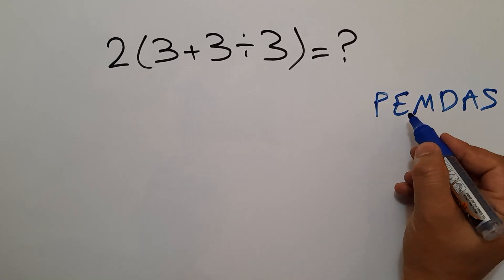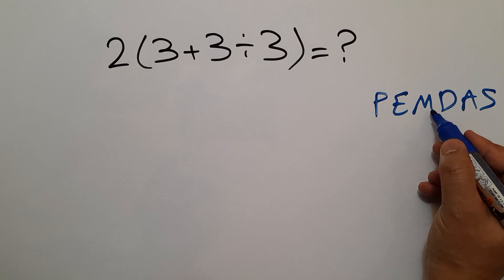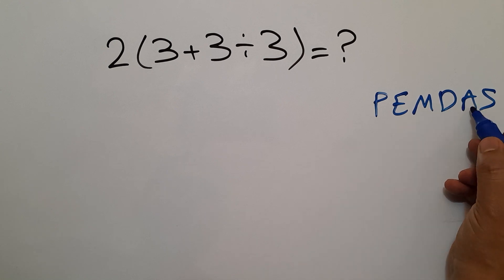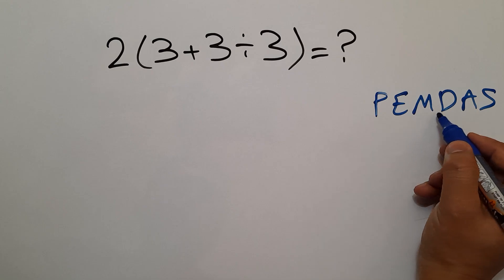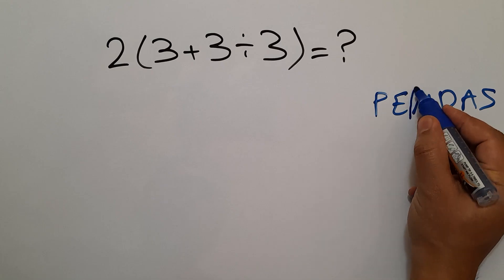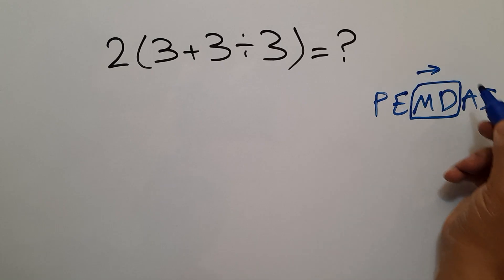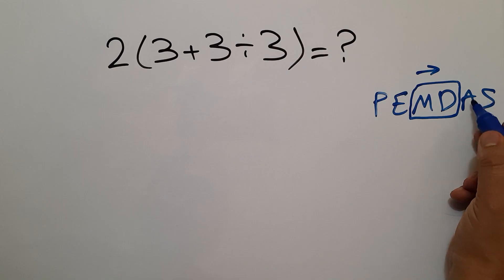So, we first do parentheses, then exponents, then multiplication and division, and finally addition and subtraction. Remember that multiplication and division have equal priority, and we work from left to right. And the same applies to addition and subtraction. We work from left to right.